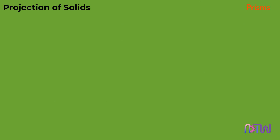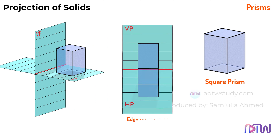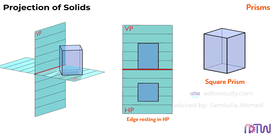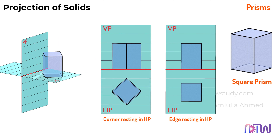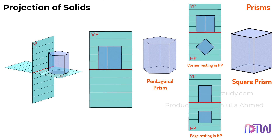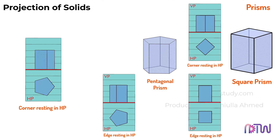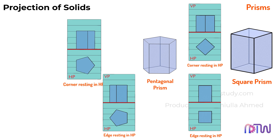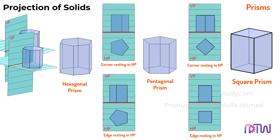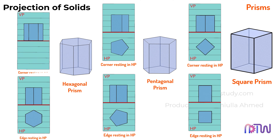Now let's consider the prisms. The top view of the prism when an edge of the base is resting on HP will be like this, and when a corner is resting on HP, the top view will be like this. For the pentagonal prism, this is the top view when an edge of the base is resting on HP, and this is the top view when the corner is resting on HP. Similarly for the hexagonal prism, top view when the edge of the base is resting on HP, and top view when the corner is resting on HP.